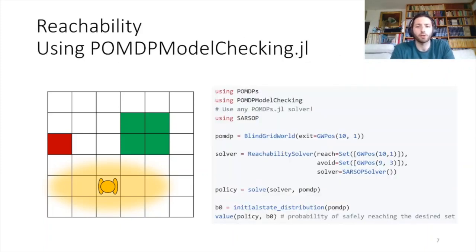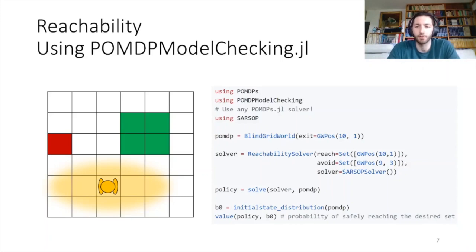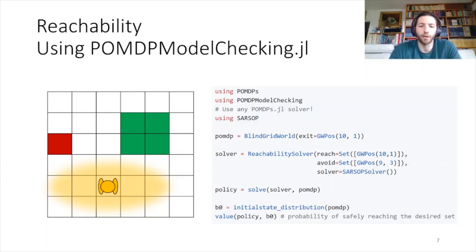Using POMDPModelChecking.jl, we define a reachability solver which takes as input the set of states to reach and the set of states to avoid. The type of state can be something that the user implements and is problem-specific — here it's using a grid world position type. It also takes as input a solver, and any solver from the POMDPs.jl ecosystem is supported. We can call the solve function to get the policy, but also a value which tells us, at a given belief state, the probability of safely reaching the desired set.